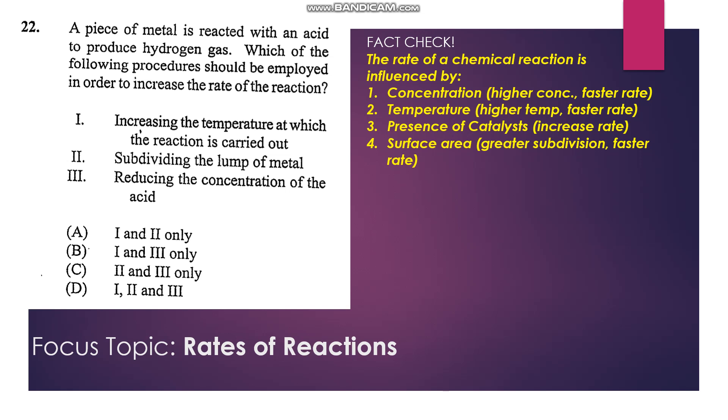Number one, increasing the temperature—that's true. Subdividing the lump of metal, that would increase surface area, so that is true. Reducing the concentration, that would not increase the rate of reaction. So one and two only—that's A.